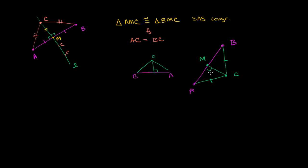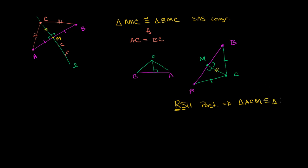So what we have right over here, we have two right angles. If this is a right angle here, this one clearly has to be as well — the way we constructed it, it's at a right angle. And then we know that CM is going to be equal to itself. We have a right angle, we have a leg, and we have a hypotenuse. We know by the RSH postulate — right angle, one corresponding leg congruent to the other, and a hypotenuse congruent to the other hypotenuse — that our two triangles are congruent. So triangle ACM is congruent to triangle BCM by the RSH postulate.